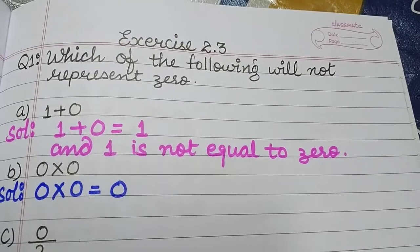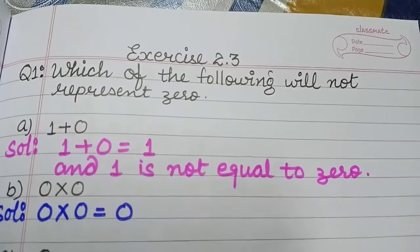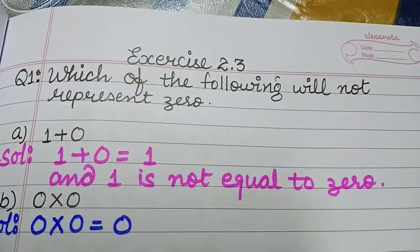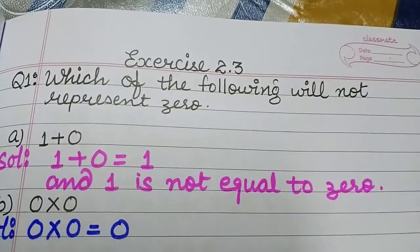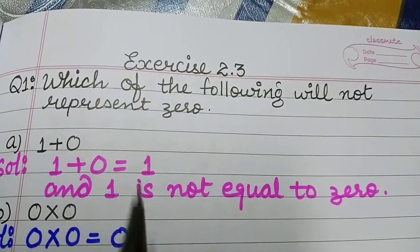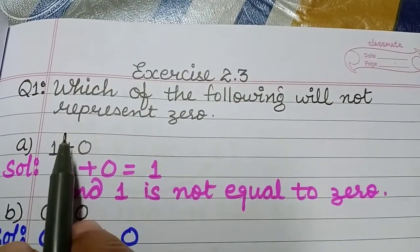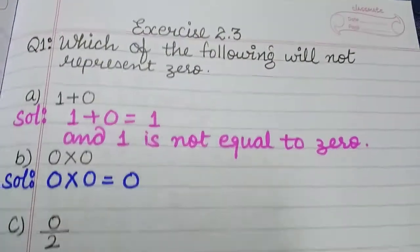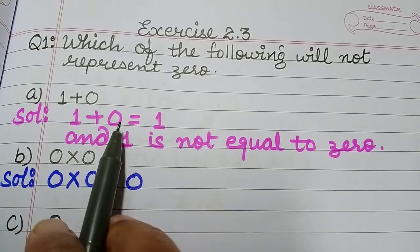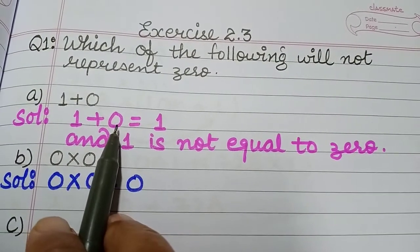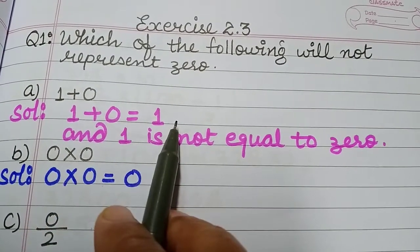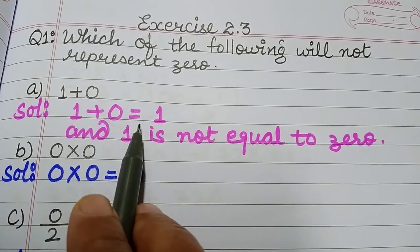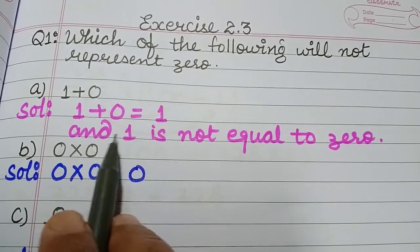Good morning dear students. Exercise 2.3 is the easiest exercise of this chapter. Question number 1 asks which of the following will not represent 0. Part (a) is 1 plus 0. We know if we add any number to 0, the answer will be the number itself, so 1 plus 0 is equal to 1.